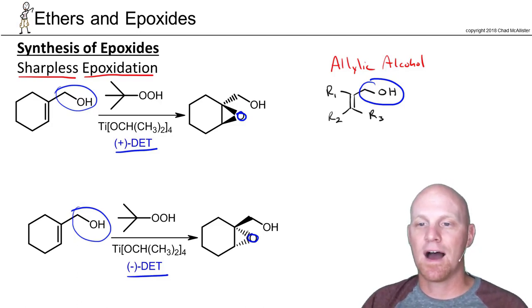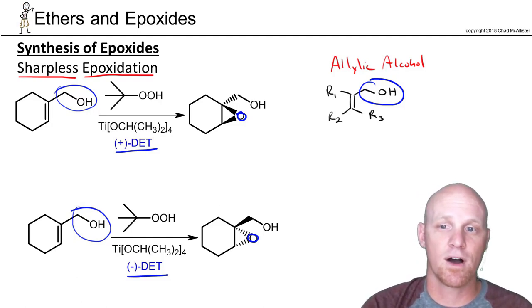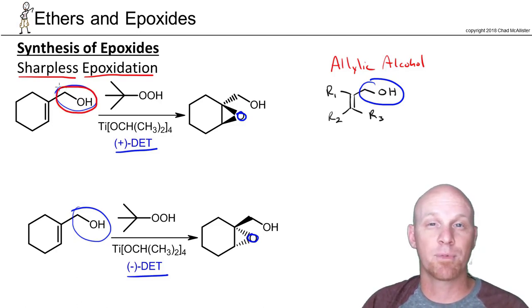I'm not going to go through the mechanism or anything. But you could have a simple predict the products kind of question here. Notice I don't even have to draw these correctly so you don't have to draw these on an exam with the allylic alcohol in the upper right. What I usually do if I'm given a question like this is I rotate my molecule around until it is in the upper right and then I know that the positive DET, oxygen is going to be on the wedge bonds. So negative DET, the oxygen of the epoxide would be on the dashed bonds. That's kind of how it works.